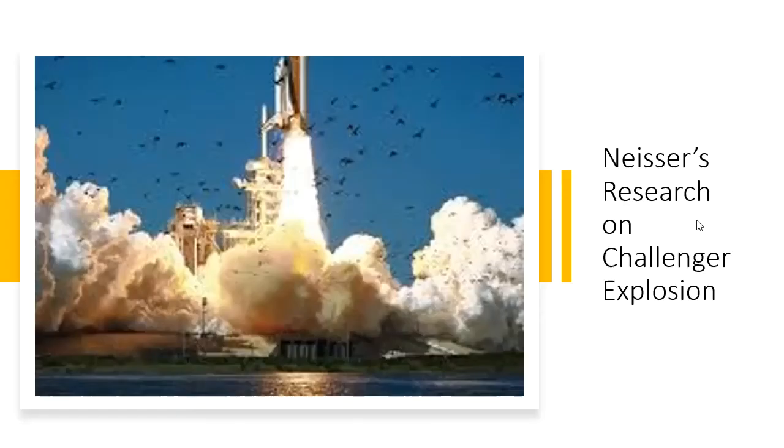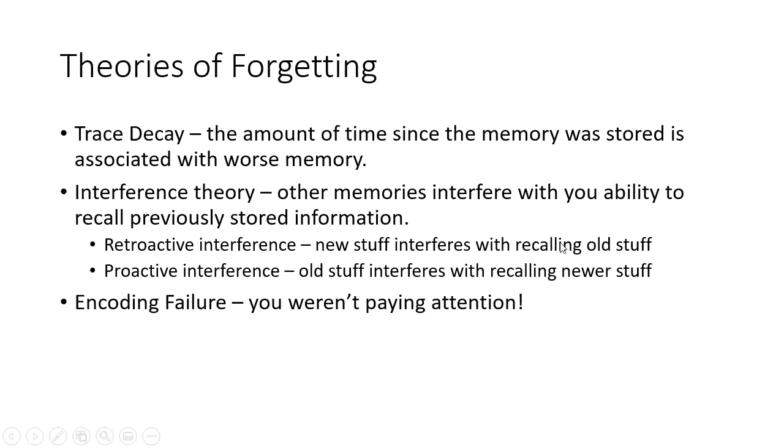One consistent finding was that people reported being much more confident in their flashbulb memories, even though they weren't more accurate. The big takeaway from Neisser's study is that confidence in memory doesn't necessarily correlate with accuracy. That doesn't stop trial lawyers from asking a witness 'on a scale of one to ten, how confident are you?' — the jury may believe a ten out of ten, but confidence doesn't mean accuracy.